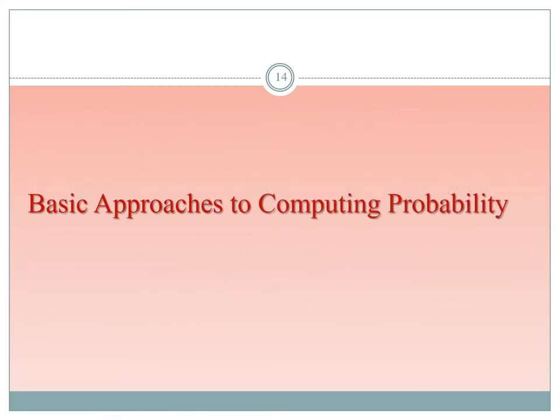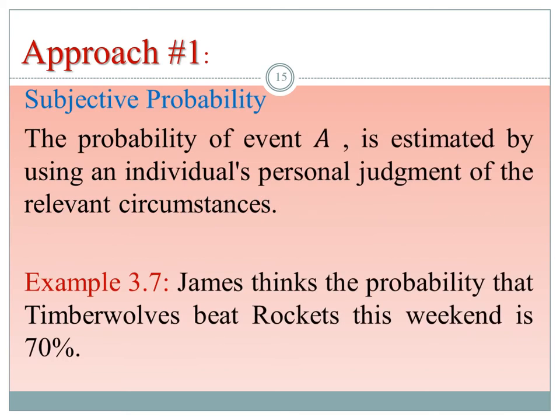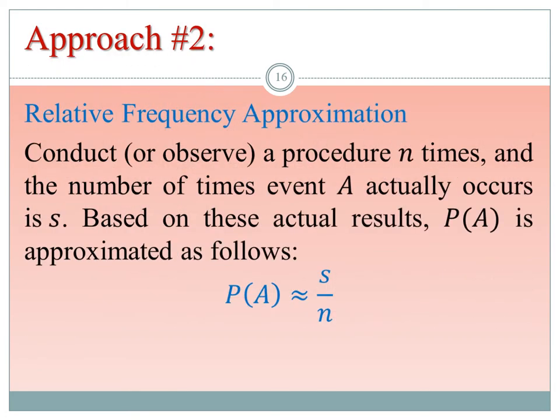There are three basic approaches to computing probability. Approach one is subjective probability: the probability of event A is estimated using an individual's personal judgment of the relevant circumstances. For example, James thinks the probability that Chamberlain will beat the Rockets this weekend is 70%. This is one person's judgment and was more commonly used historically.